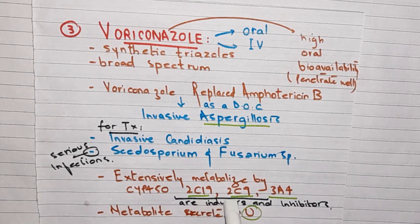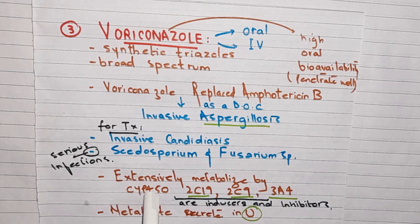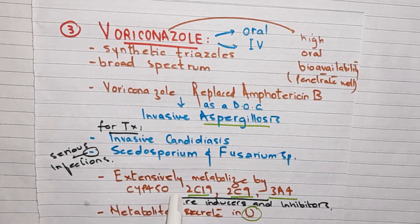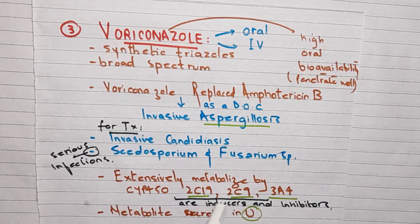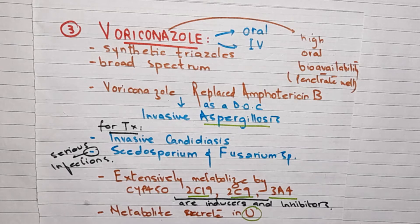Voriconazole is extensively metabolized by CYP450 isoenzymes: 2C19, 2C9, and 3A4. They are also inhibitors of these enzymes. If you have any agent that is metabolized by these enzymes, Voriconazole will inhibit that metabolism and can increase the concentration of those agents.